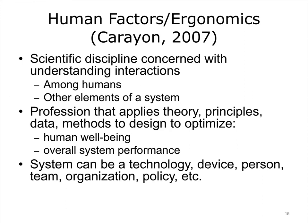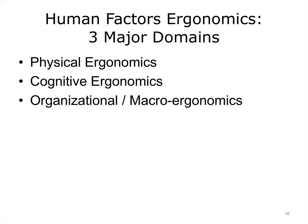Human factors is a profession that applies theory, principles, data, and methods to design in order to optimize human well-being and overall system performance. Unlike HCI, a system does not merely refer to a computing system — it may be a device, person, team, organization, or policy. Ergonomics is broadly conceived as the study of work and factors that affect it, and the term is sometimes used interchangeably with human factors. We can characterize three major domains: physical ergonomics, cognitive ergonomics, and organizational or macroergonomics.